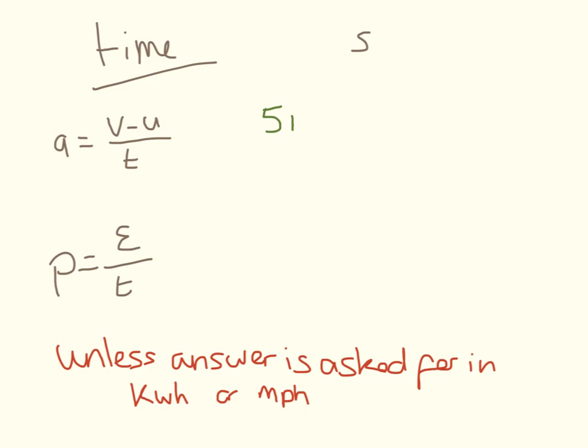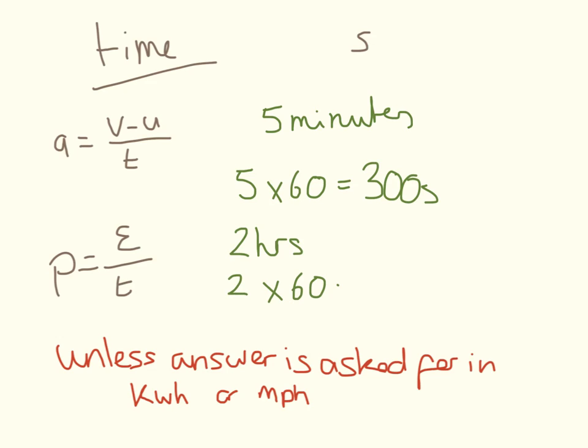You could have a time period of five minutes. To convert that into seconds, we just do five times 60. This is going to be 300 seconds, or it might say something like two hours. We need to do two hours times 60 minutes times 60 seconds, which is going to be 7,200 seconds.